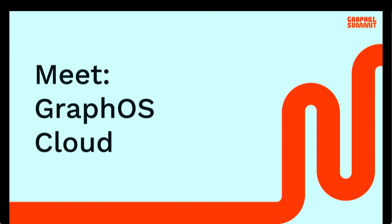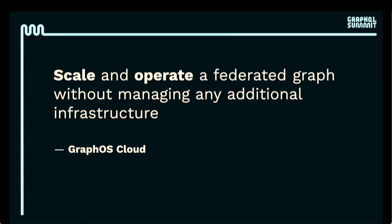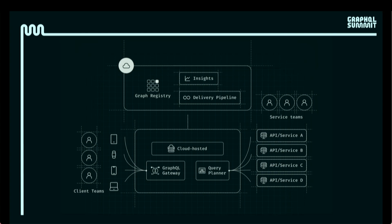This is where GraphOS Cloud comes in. Brian has been one of the tech leads on our cloud team and has been instrumental in cloud dedicated and serverless coming to market. Our mission with GraphOS Cloud is to help you scale and operate a federated graph without managing additional infrastructure, and along the way solve some of those API gateway challenges. A new diagram on our homepage shows how GraphOS Cloud now sits between your clients and your subgraphs, providing a layer to run your supergraph for you — extending the existing graph registry, insights, and delivery pipeline for a more holistic solution.